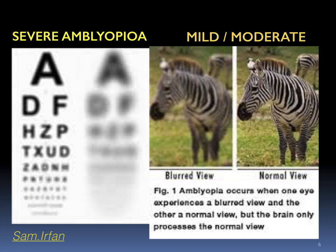What does an amblyopic eye perceive? These figures show zebras where the blurred vision represents what the amblyopic eye sees — whether mildly or moderately amblyopic — compared to the clear image perceived by the good eye. In severe amblyopia, the blurred vision is extreme in the lazy eye. As a result, the extremely blurred vision from the amblyopic eye is blocked by the brain in favor of the clear vision of the good eye, and gradually the neuronal pathway of the amblyopic eye becomes blocked and the cells become shrunken.